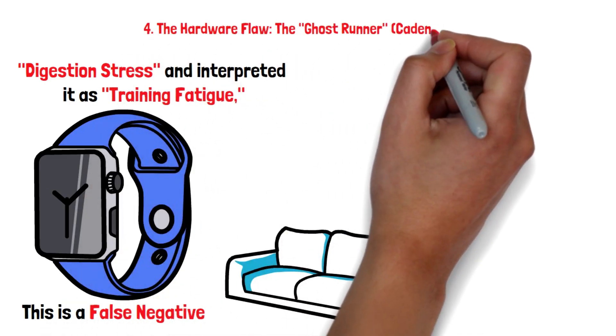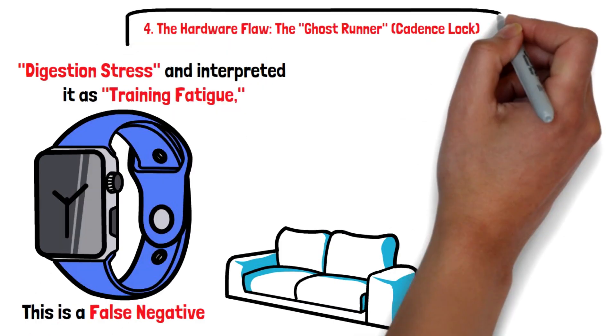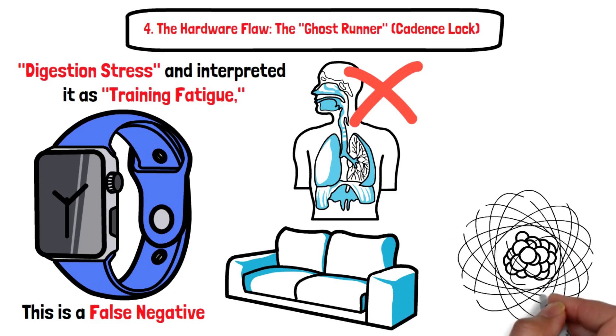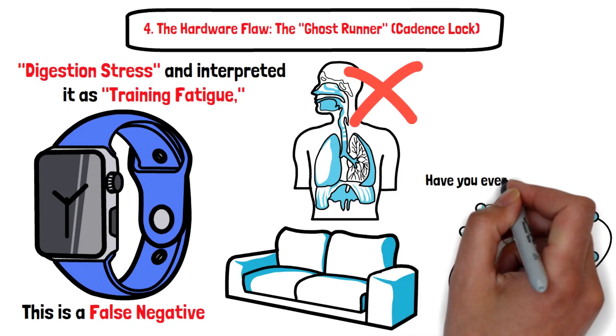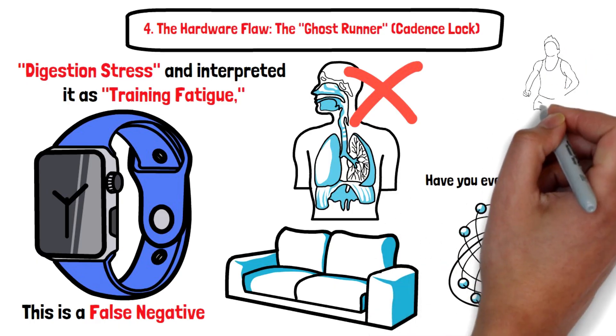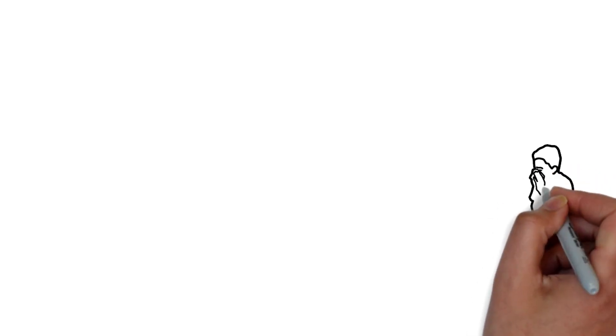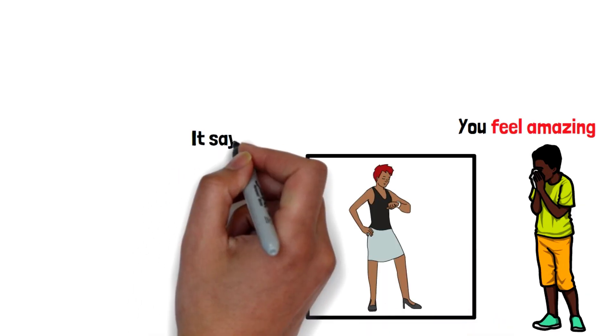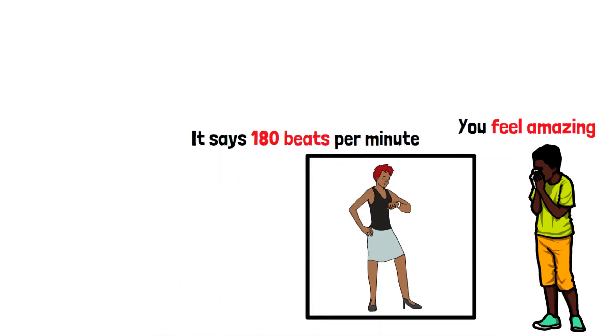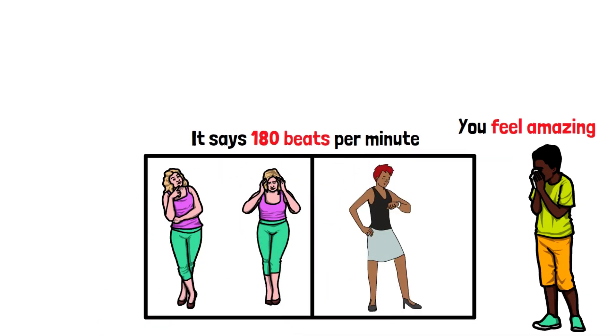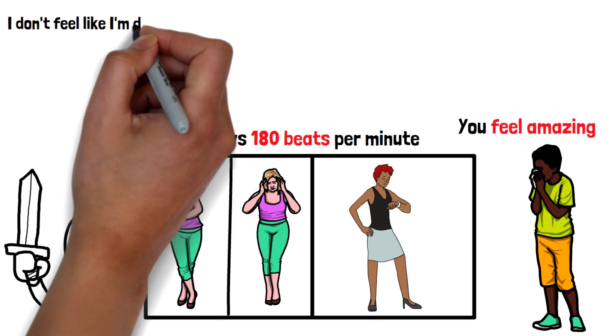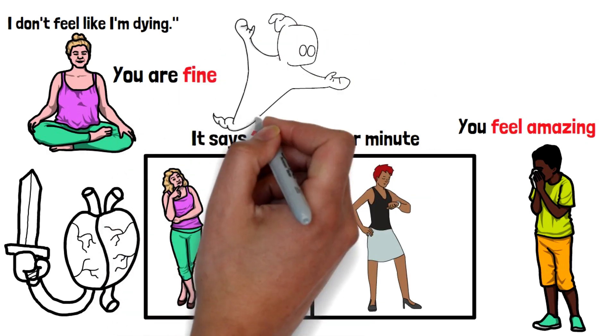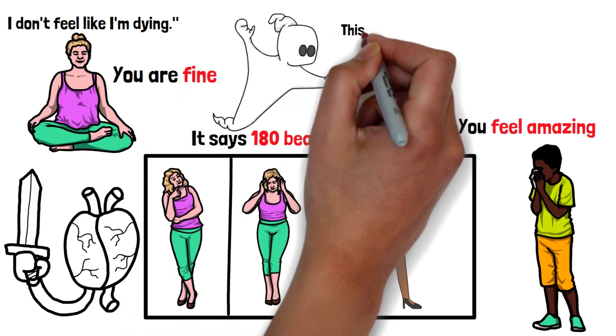Four, the hardware flaw: the ghost runner, cadence lock. But sometimes the lie isn't about biology, it's about physics. Have you ever experienced this? You're running nice and easy, you're breathing through your nose, you feel amazing. You look at your watch and it says 180 beats per minute. You panic. You think, 'Am I having a heart attack? I don't feel like I'm dying.' Relax, you're fine. You've just met the ghost runner.